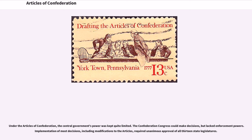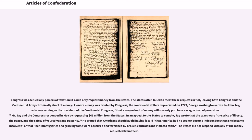Under the Articles of Confederation, the central government's power was kept quite limited. The Confederation Congress could make decisions, but lacked enforcement powers. Implementation of most decisions, including modifications to the Articles, required unanimous approval of all 13 state legislatures. Congress was denied any powers of taxation; it could only request money from the states. The states often failed to meet these requests in full, leaving both Congress and the Continental Army chronically short of money. As more money was printed by Congress, the Continental dollars depreciated. In 1779, George Washington wrote to John Jay that 'a wagon load of money will scarcely purchase a wagon load of provisions.'